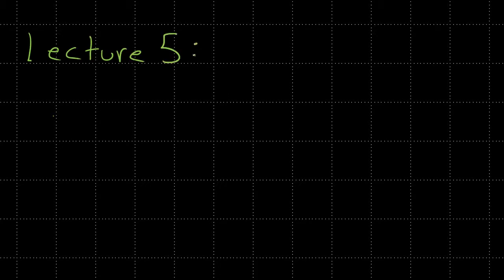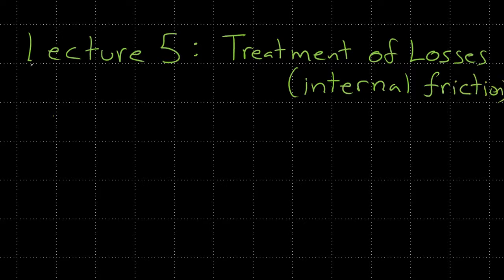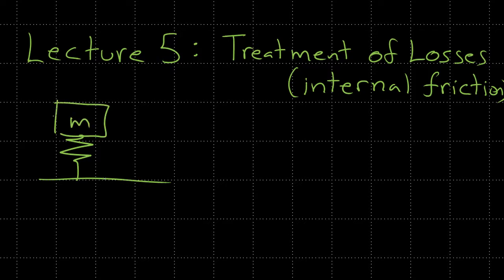Let's begin the fifth lecture on piezoelectric materials, which is going to be talking about treatment of losses. We can think of losses as internal friction. In mechanical systems, typically we have a system where we have a spring, a mass, and to represent losses, we have some type of dashpot. This dashpot applies force to the moving mass and dissipates the energy within that system.